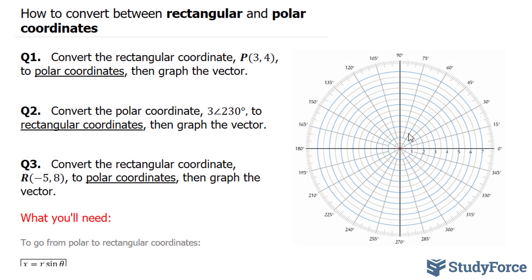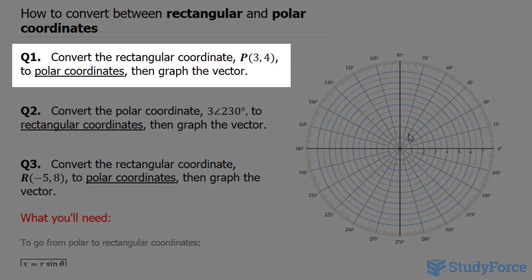In this video, I'll show you how to convert between rectangular and polar coordinates. Question 1 reads, convert the rectangular coordinate, point P which has the coordinates 3 and 4, to polar coordinates, then graph the vector.